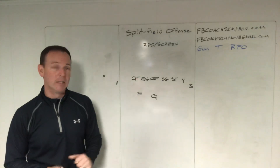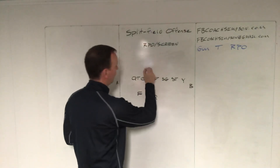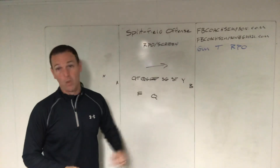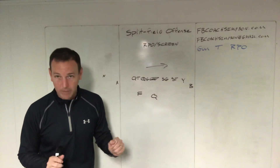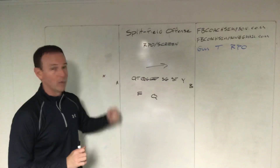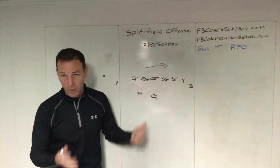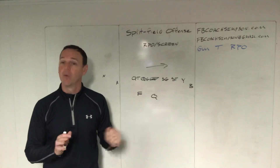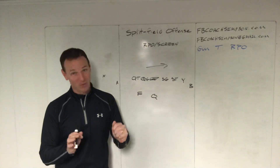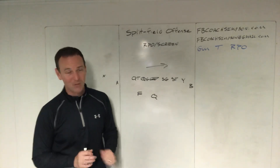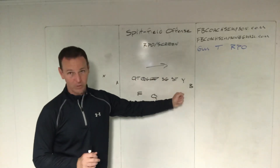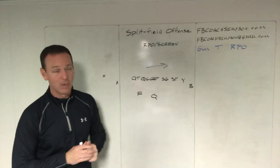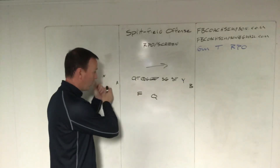The idea would be on this side of the field we're going to be running a run play or a pass play, and on this side of the field we're going to be running a screen or a run play — so you can do it either way. Today we're going to talk about my favorite one, which is Buck Sweep. The run play would be to the strong side, and the pass concept or screen concept would come back to the quick side.